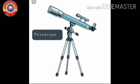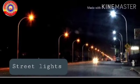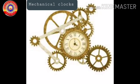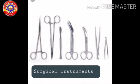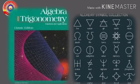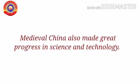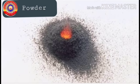Some of the technologies introduced through Arab contact include: instruments used for making telescopes, street lighting for cities, mechanical clocks, the principle of the gear, surgical instruments, and subjects like algebra, alchemy, and trigonometry.